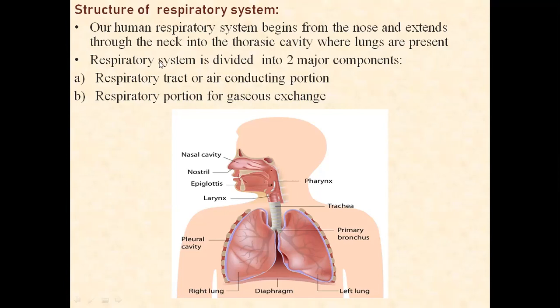So the respiratory system is divided into two major components. The first is the respiratory tract, or the air-conducting portion. The second is the respiratory portion for gaseous exchange.